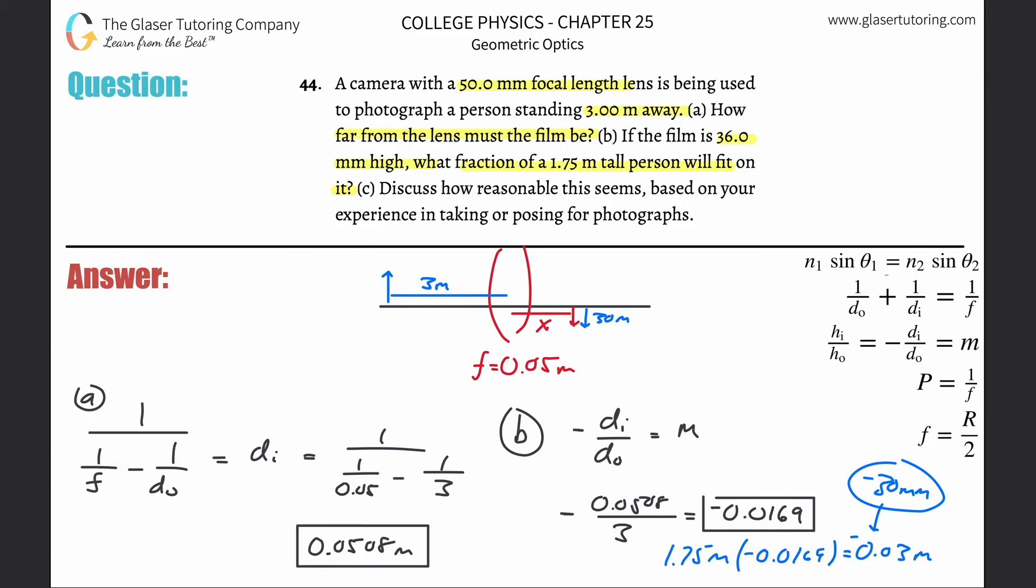So that's how to do that. The other way to do it is instead of calculating the magnification and then multiplying it by the height, you could have just used this part of the equation over here. You could have set everything on equal. You know the image distance, you know the object distance, you also know the height of the object.